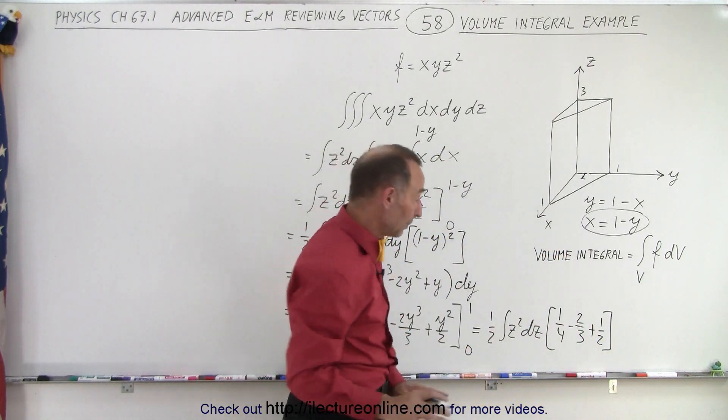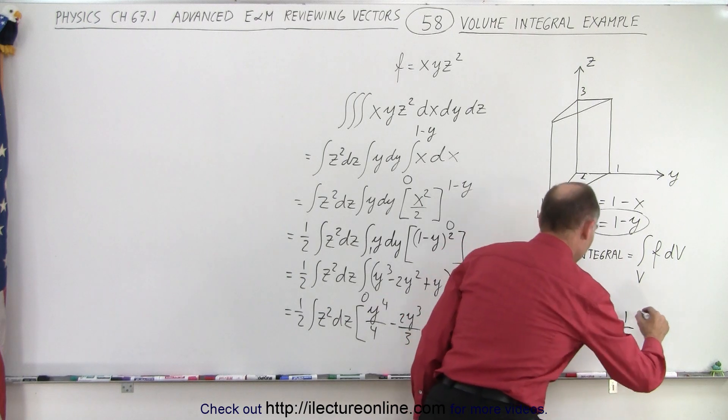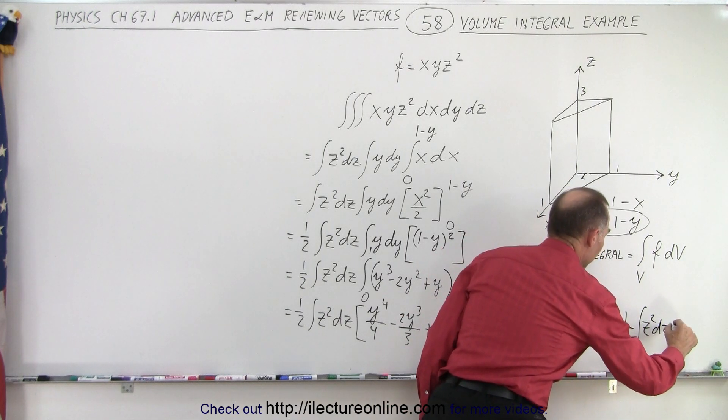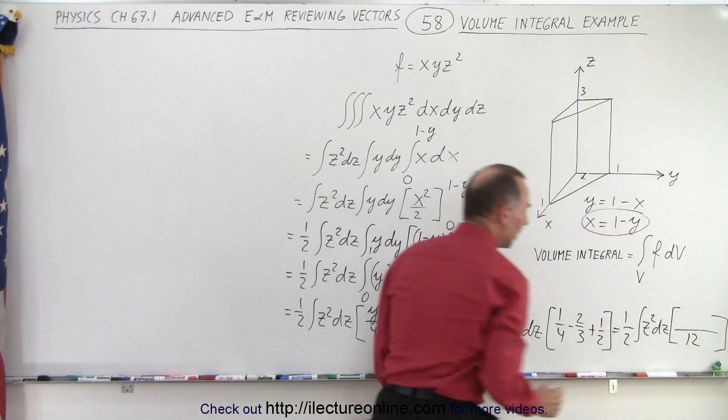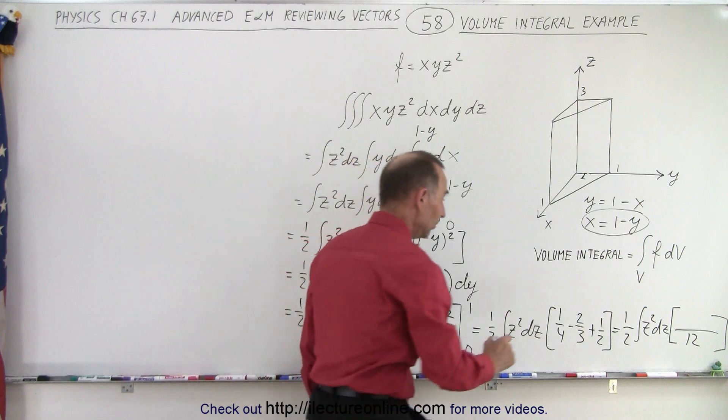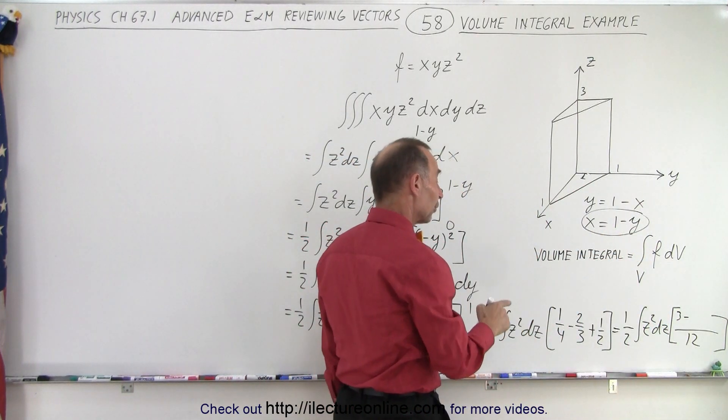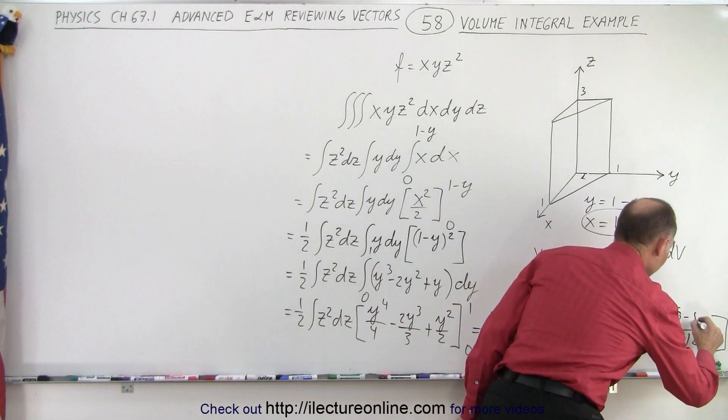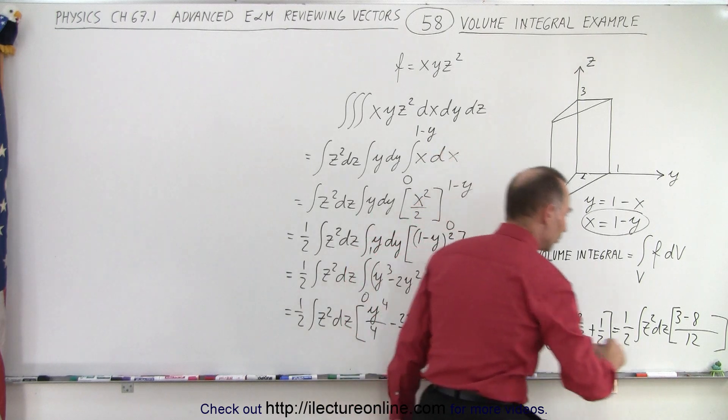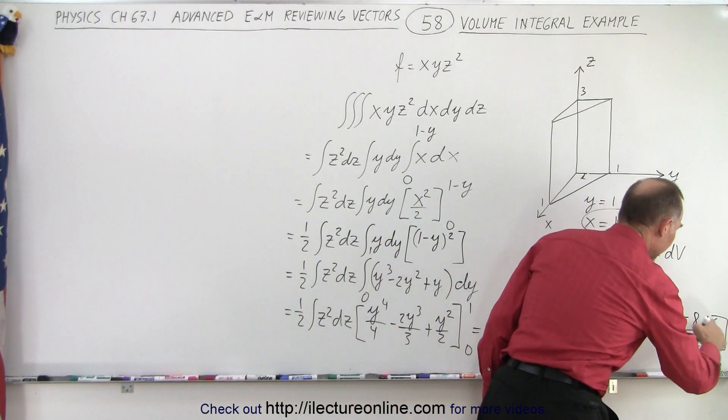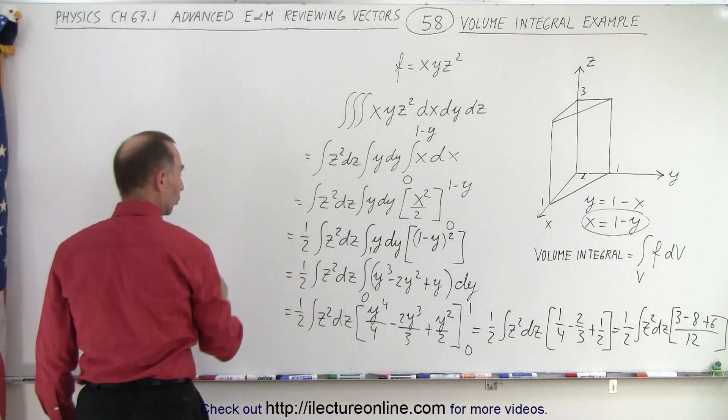Putting all that over a common denominator, that is equal to 1 half times the integral of z squared dz, times over 12 as the common denominator. 4 goes into 12 three times, minus, 3 goes into 12 four times, times the negative 2 is minus 8. This is a 3. And 2 goes into 12 six times, so plus 6. 9 minus 8 is 1, so we end up at 1/12 times 1 half, which is 1 over 24.